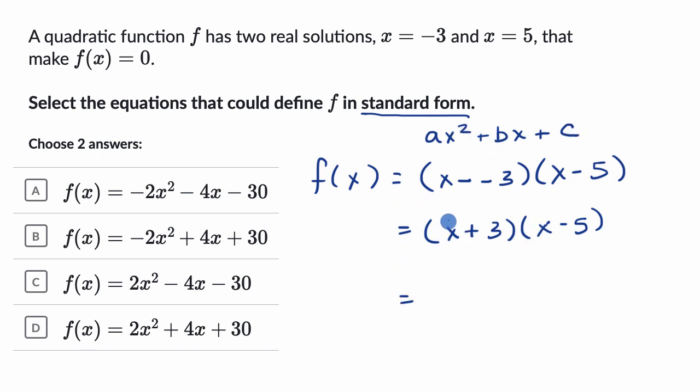So this is going to be equal to x times x, which is x squared. We have x times negative five, which is negative five x. We have three times x, which is three x. And then we have three times negative five, which is minus 15, or negative 15, or we're going to subtract 15 here.